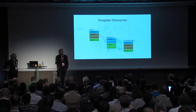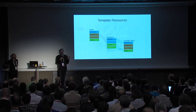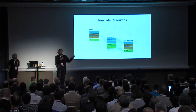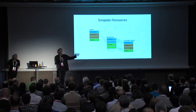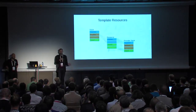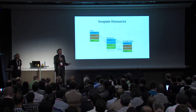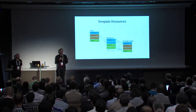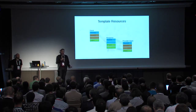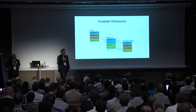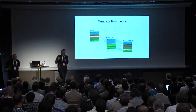A provider resource works like this: every resource has properties going in and attributes you can get out. A stack template also has parameters going in and outputs coming out. So we reused the same template format to implement the provider resource. Whatever parameters you define in that template become properties of the resource. Whatever outputs you define become attributes of the resource that you can retrieve in the main stack using get_attribute. Steve will also talk about using the environment to map resource types - you can map a built-in resource type to a template resource type.